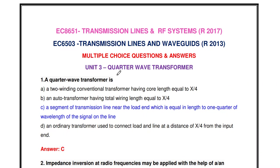The quarter wave transformer plays a very important role in impedance matching in transmission lines. In order to provide impedance matching, we may use the quarter wave line, or we may use stub matching — either single stub matching or double stub matching. These are all the various methods to provide impedance matching in a transmission line. In this video, we are going to discuss about the quarter wave transformer.